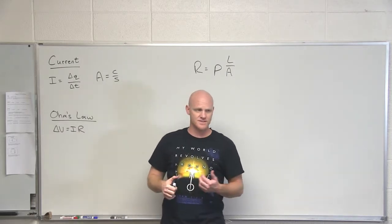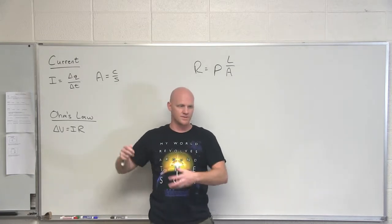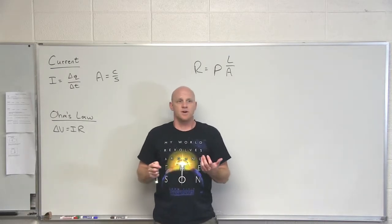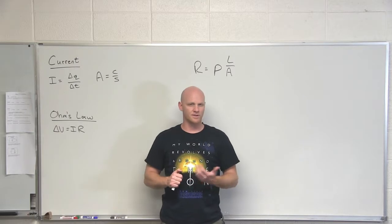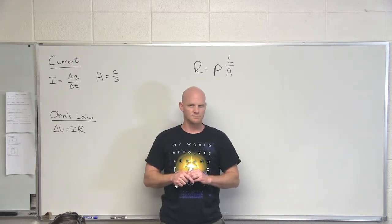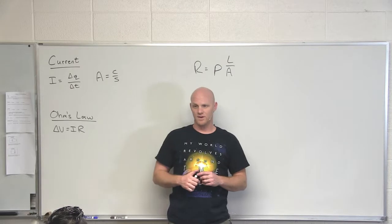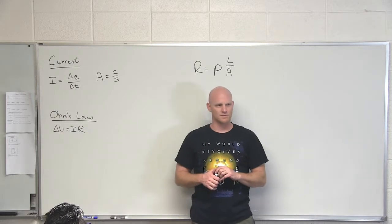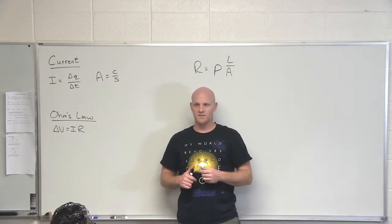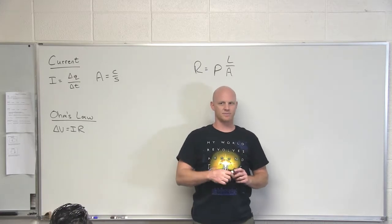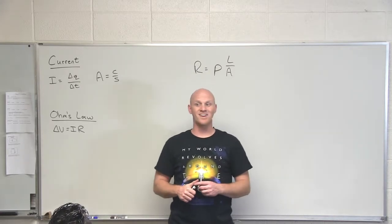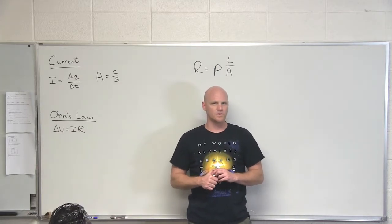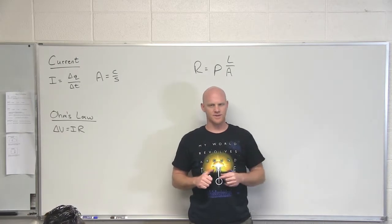Essentially, all we're doing is applying an electric field to the electrons in a wire, and they're going to move opposite to the direction of the electric field. So if I turn a light switch on, how long does it take for the light to turn on? Pretty quick. Are the electrons moving at the speed of light? They are not — not even close. So how do we reconcile the fact that the light turns on so quickly?